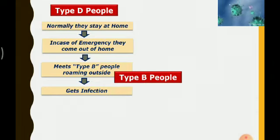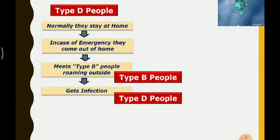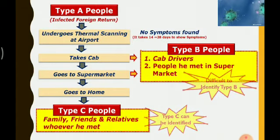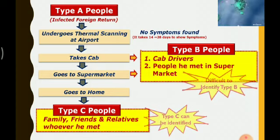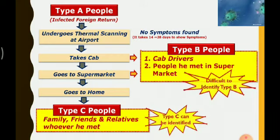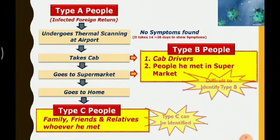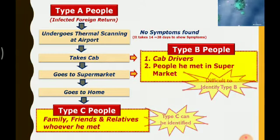So those infected become Type D. These are the four categories of people. It is very difficult to identify Type B people. Once a Type A person is found to be infected, we can quarantine them and trace their family, friends, and relatives. But Type B people — cab drivers and people met in the supermarket — we cannot easily identify. The government is struggling to identify these Type B people.